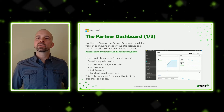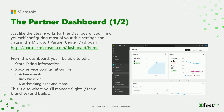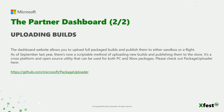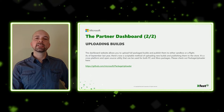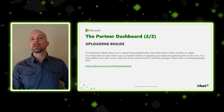First off, the Microsoft Partner Center Dashboard. It's similar to the Steamworks Partner Dashboard, where you set up configuration options for your title. This is where you will manage store listing information, Xbox Service Configurations like Achievements, Rich Presence and Matchmaking Rules, Builds and Flights, also known as Steam Branches and Depots. The Dashboard website allows you to upload a full package build and publish them to either a sandbox or flight. As of September last year, there's now a scriptable method of uploading new builds and publishing them to the store. It's a cross-platform and open-source utility that can be used for both PC and Xbox packages. Please check out the package uploader in the link below.